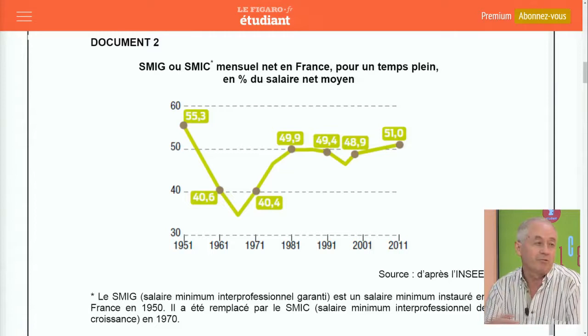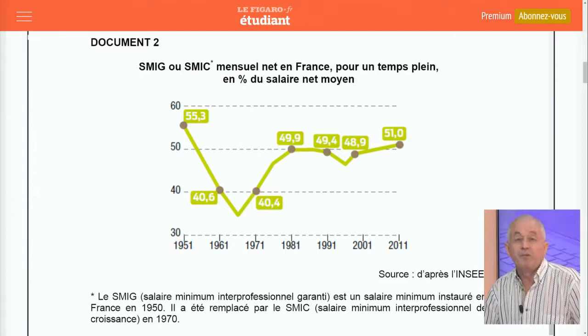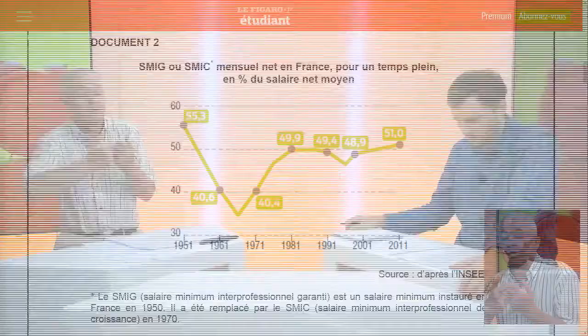On pouvait aussi se poser la question de savoir que, dans la représentation classique, le salarié n'a pas de capital humain incorporé, c'est-à-dire de niveau de qualification, de compétence, de savoir-faire. Alors que dans les faits, il y a ces questions-là qui influent très considérablement. On pouvait se servir de la question des diplômes, des catégories socioprofessionnelles, du niveau hiérarchique, etc., pour alimenter cette partie.